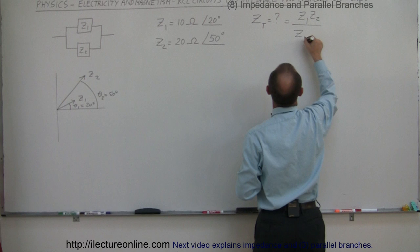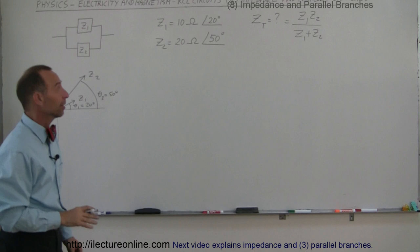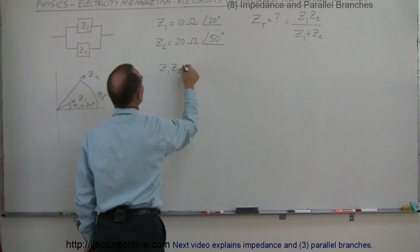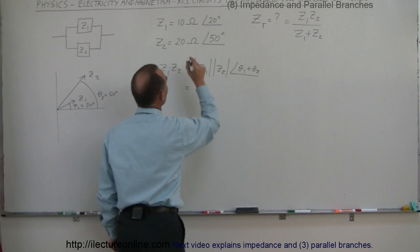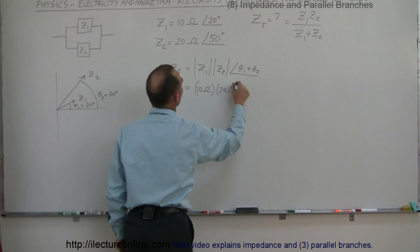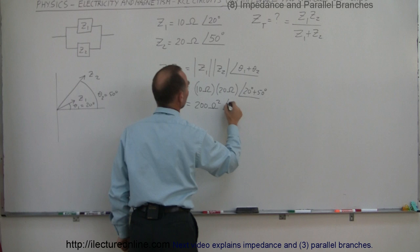We need to multiply and add the two impedances. The multiplication is the easy part: in polar form, Z1 times Z2 simply equals the magnitude of Z1 times the magnitude of Z2, with a phase angle equal to theta-1 plus theta-2. So the magnitude is 10 times 20, which is 200 ohms squared, and the phase angle is 20 plus 50, which is 70 degrees. That's the product of the two impedances.